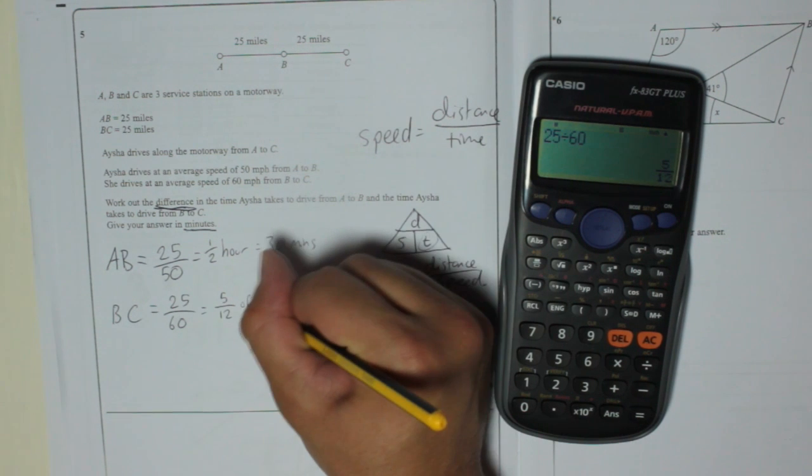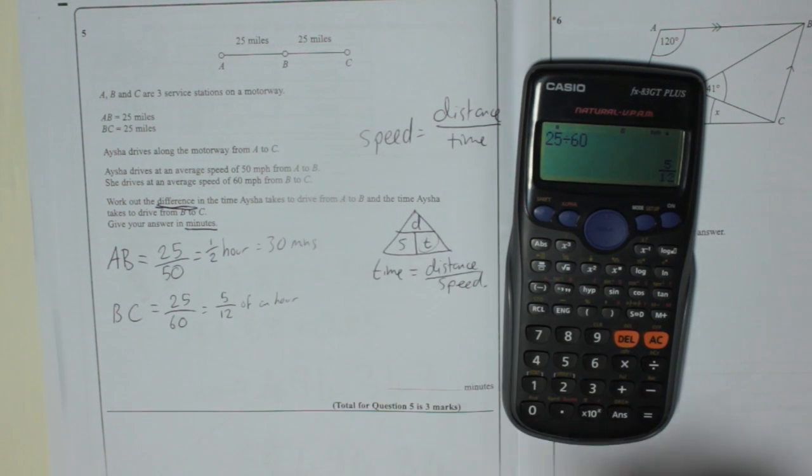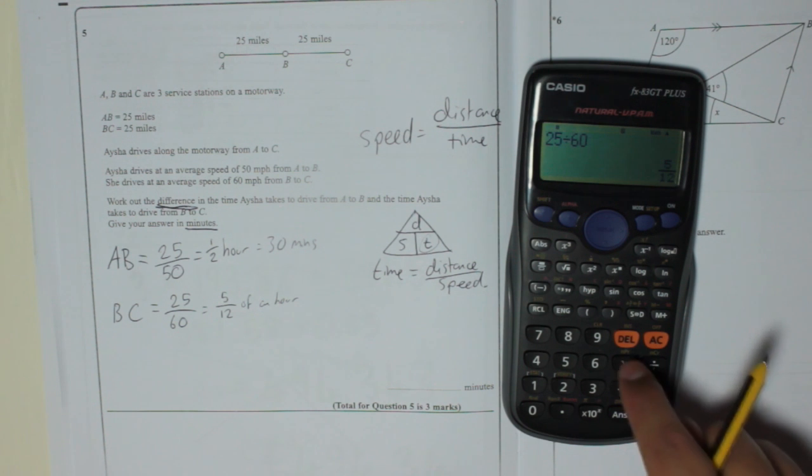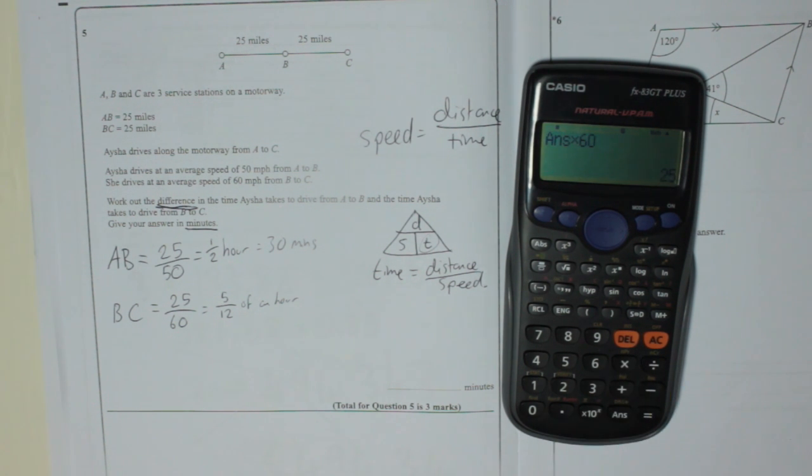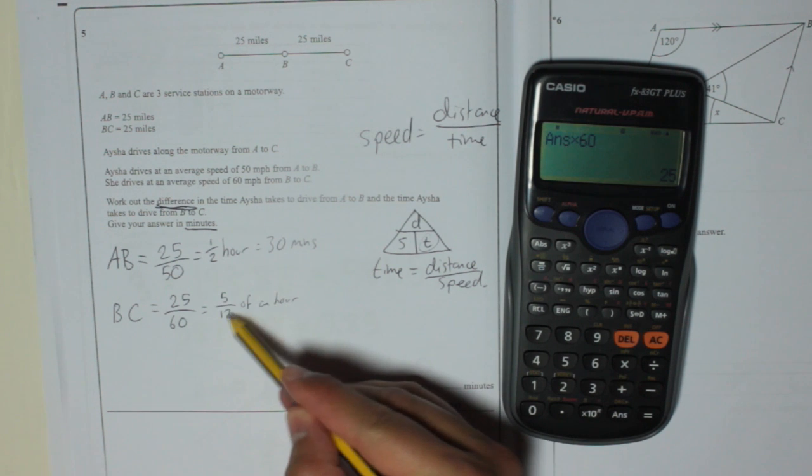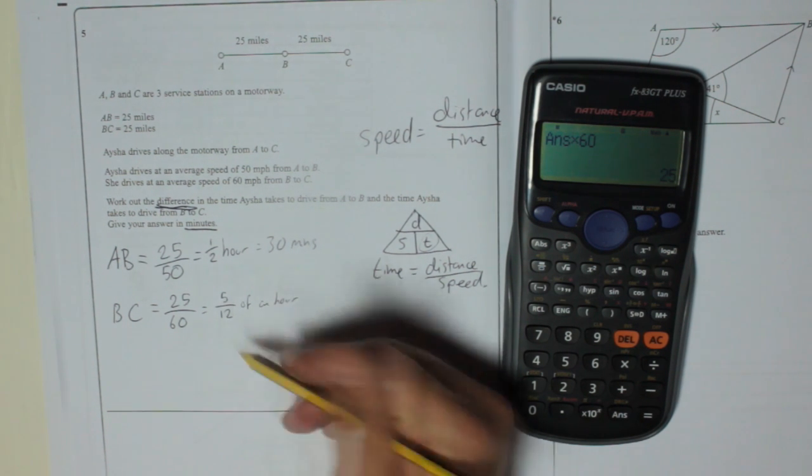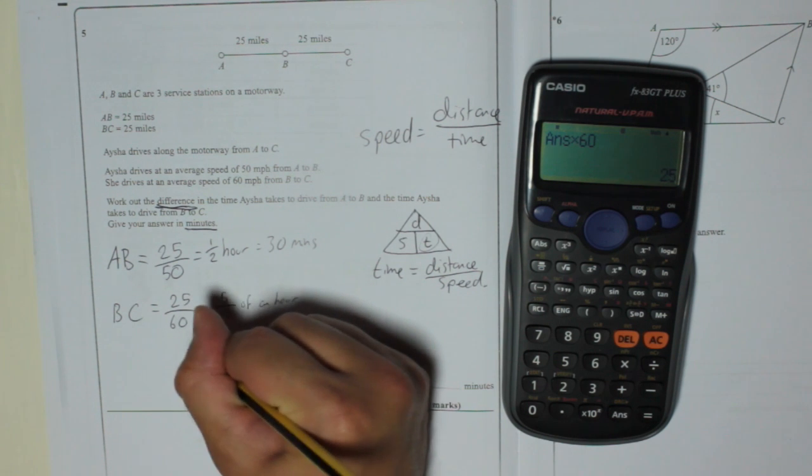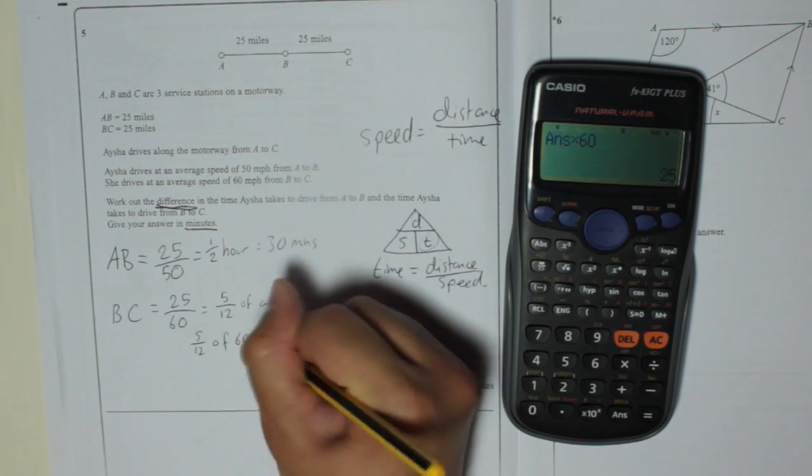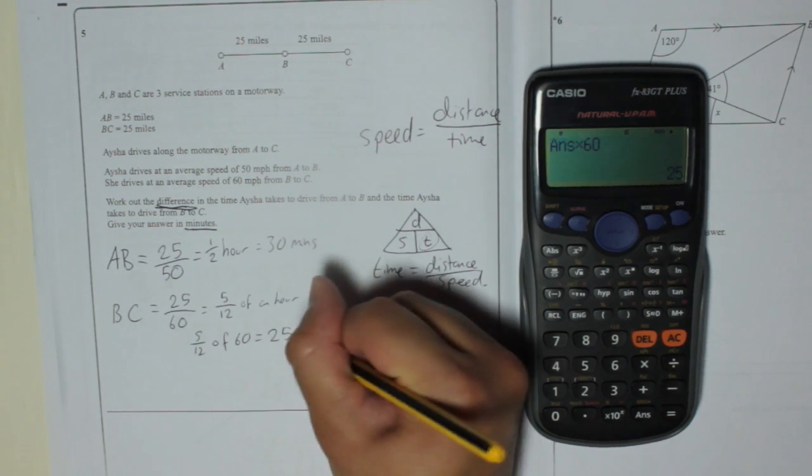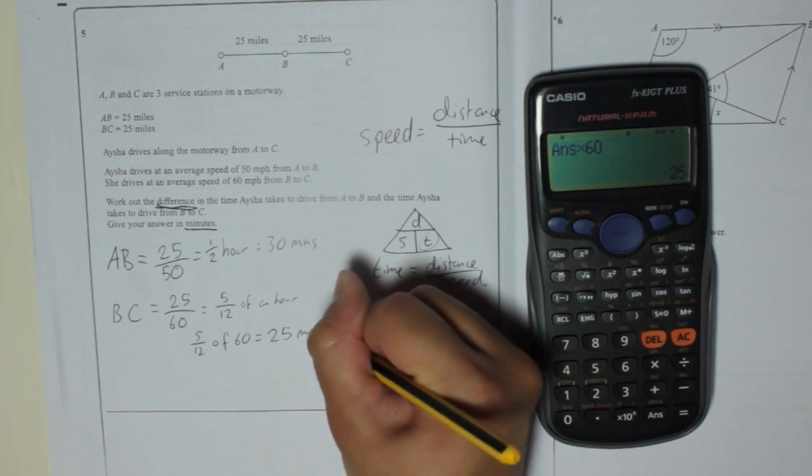Of an hour. Now that's 5/12 of 60. So if I times that by 60, it's 25 minutes. Remember, 5/12 of an hour - we want it in minutes, so it's 5/12 of 60 minutes. So 5/12 of 60 is 25 minutes.